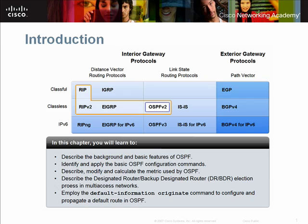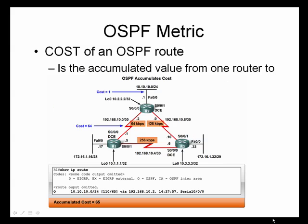The major advantages over RIP include fast convergence and its ability to scale to much larger networks. Because RIP uses only hop count as its metric, it may create paths that are not optimal, whereas OSPF will choose the fastest route to a destination even if it must traverse more hops.